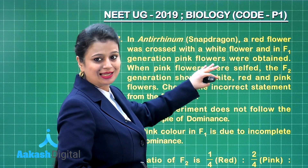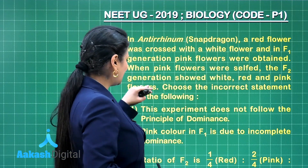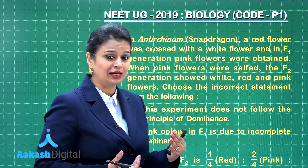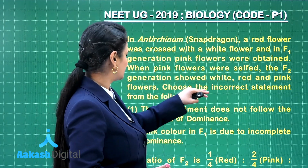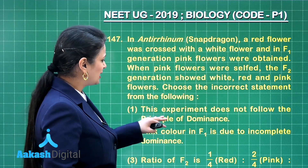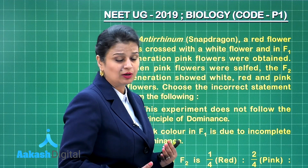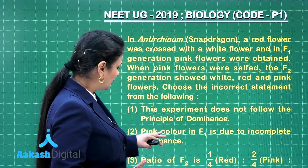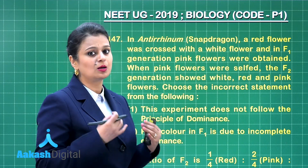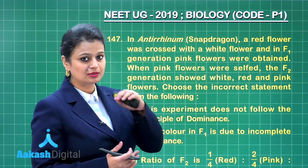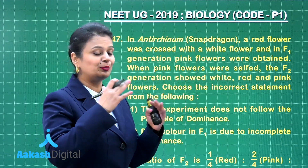When the pink flowers were selfed, the F2 generation showed white, red, and pink flowers. These three phenotypes are obtained in a ratio of 1:2:1 — this is the phenotypic ratio. The statement that this experiment does not follow the principle of dominance is quite correct because it is a case of incomplete dominance. Pink color in F1 is due to incomplete dominance; when F1 does not resemble either parent, this is incomplete dominance. Here F1 is intermediate between the two parents.